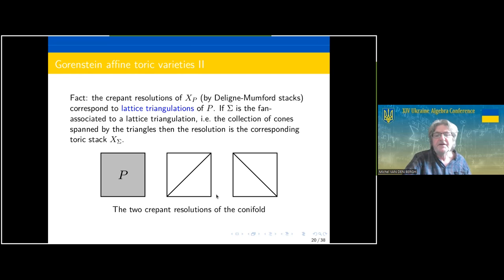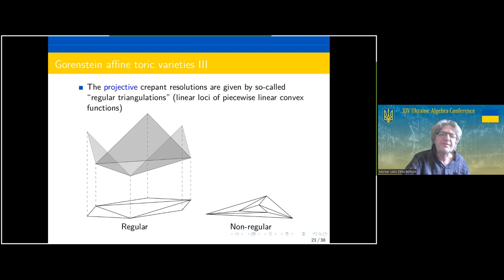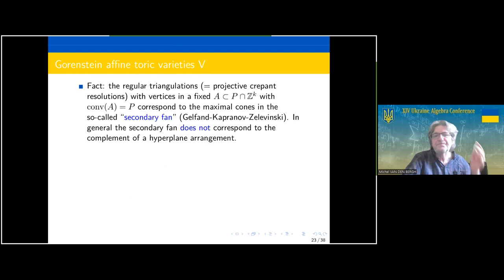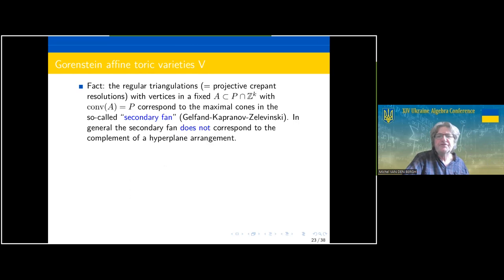A triangulation does not necessarily give a projective crepant resolution. For projective crepant resolutions an additional condition is needed: the triangulation should be the projection of a piecewise linear convex function — these are called regular triangulations. On the left there is a picture of this. On the right there is a triangulation that cannot be obtained this way, so it still gives a crepant resolution but a non-projective one. The two triangulations of the square are regular and hence projective, as expected since GIT resolutions are always projective.